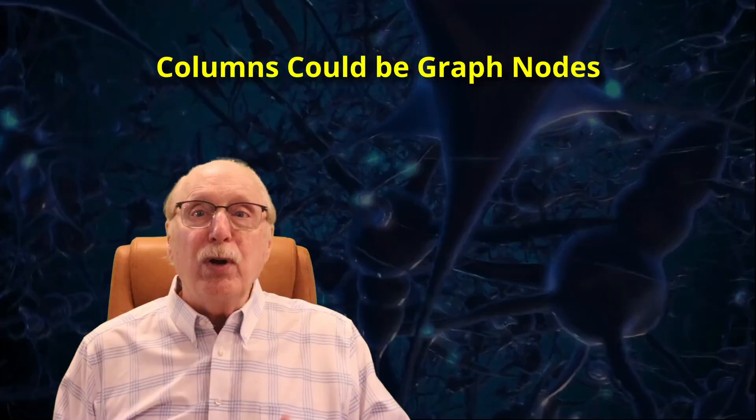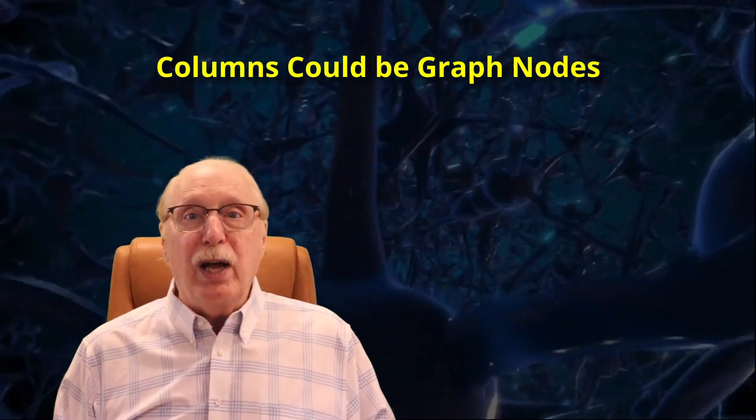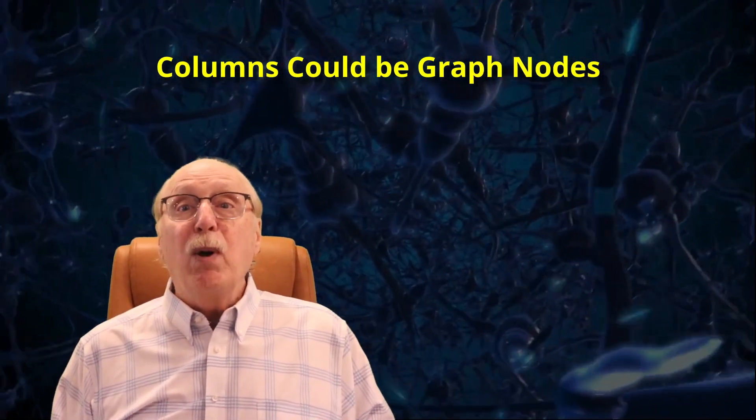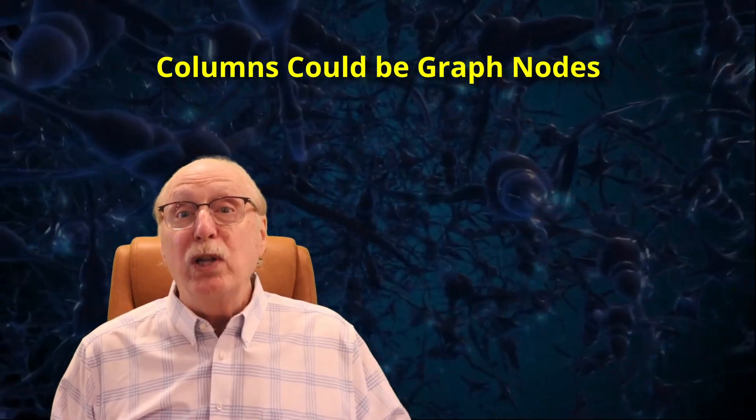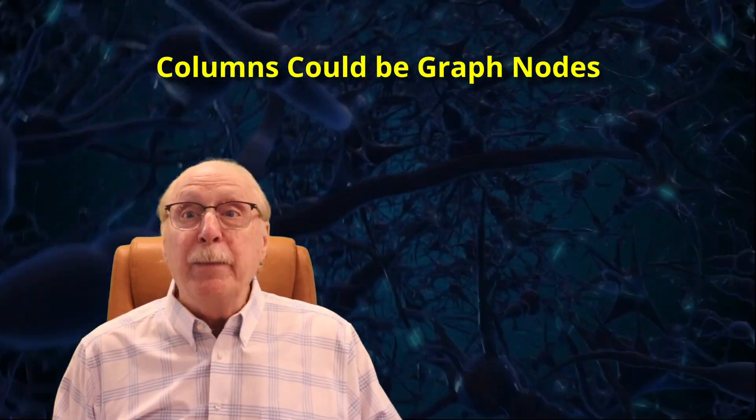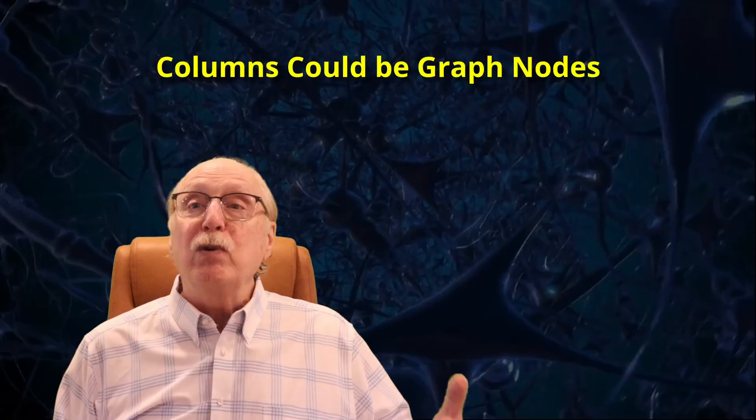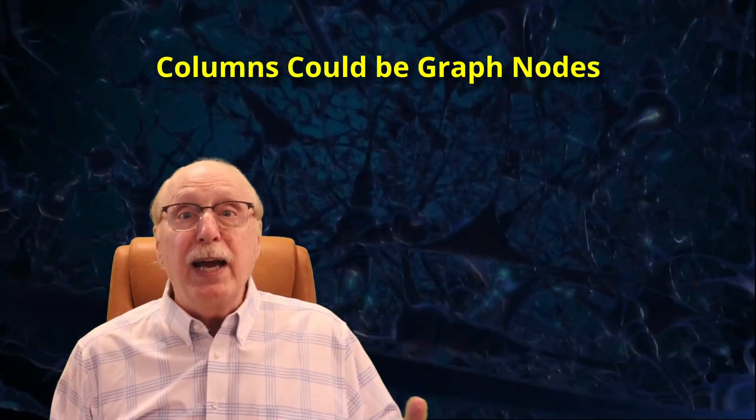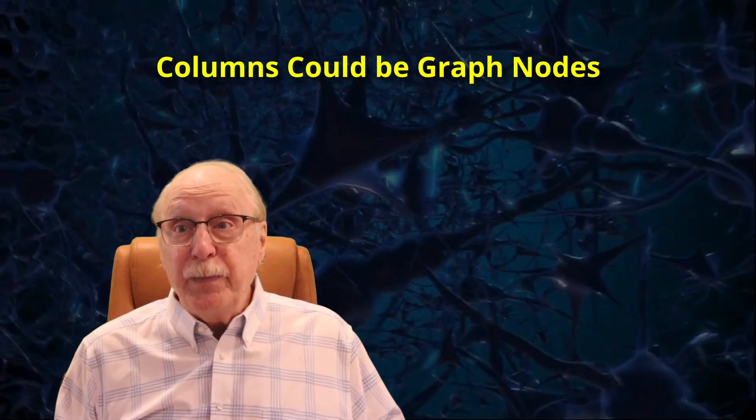Instead, cortical columns fit perfectly with a graph-based knowledge model. In this model, each column is a node, like FIDO or DOG, with connections that represent relationships like ISA, HASA, PART OF, and so on. These nodes can inherit attributes, handle exceptions, and even form bidirectional links.